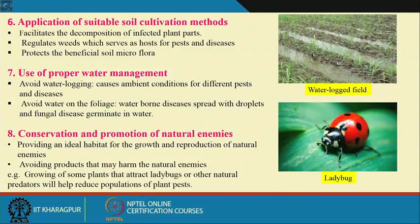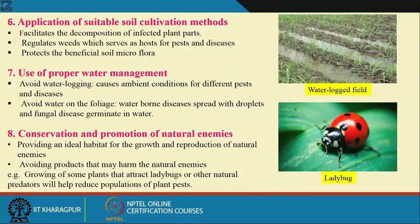Proper water management means avoiding water logging — except for rice, other crops do not require standing water. Water logging creates ambient conditions for different pests and diseases. Water on the foliage should also be avoided, as fungal spores germinate in water droplets. The field should be kept airy.